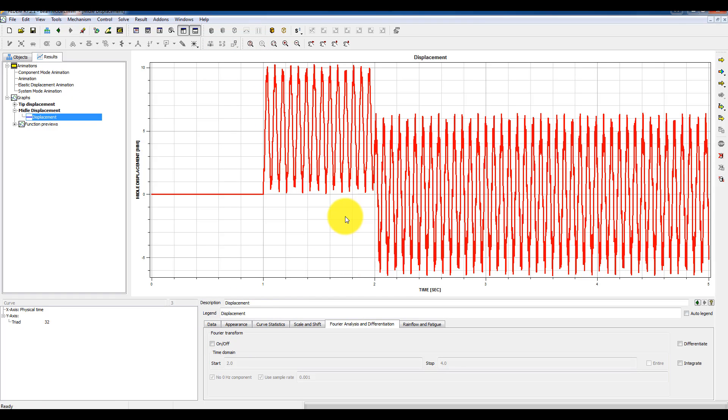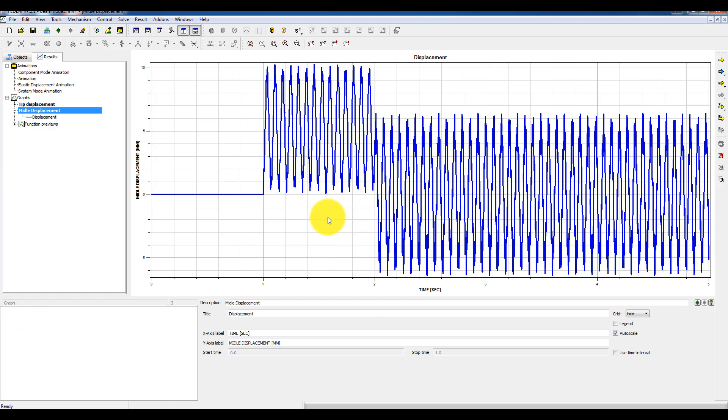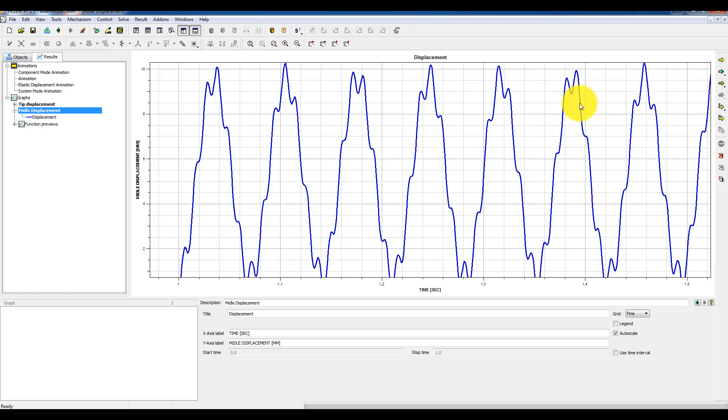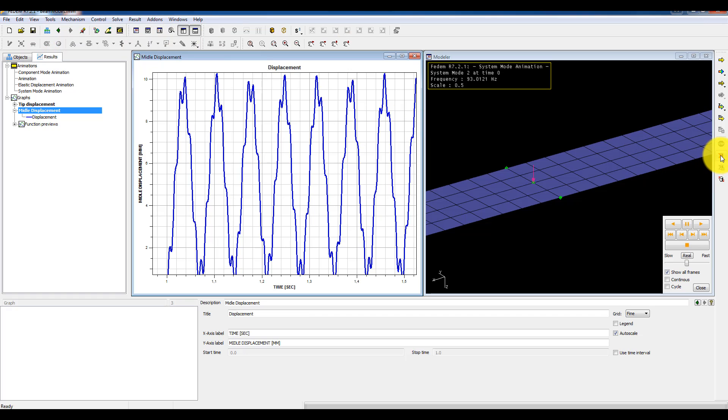And here you see the oscillation. This is the oscillation without damping. And you saw the fast Fourier transform on this one, which contained two modes, basically. Then I have to apply correct damping on these two modes.